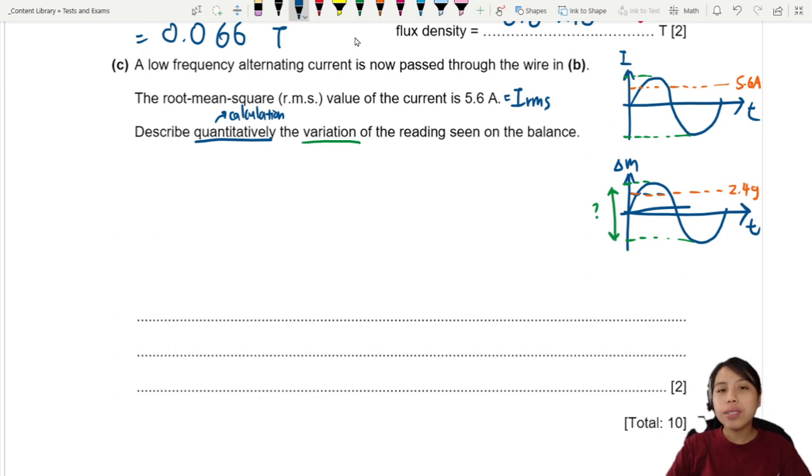The shortcut is, first step, we try to find what is the peak current based on the RMS. So the equation is, I_RMS is I_peak over root 2.